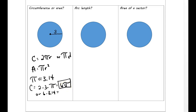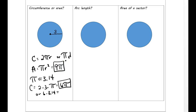And then for area, if we wanted to do area, I'm just plugging in a 3 there. So what is 3 squared? Well, 3 squared is 9. So the answer is just 9π, and we're just going to leave it like that.